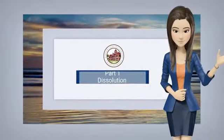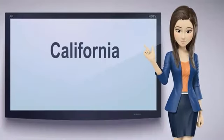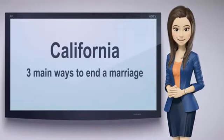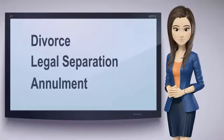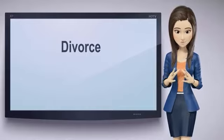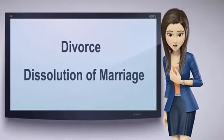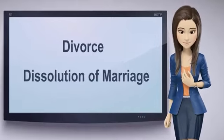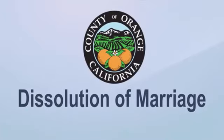Before you begin, there are some things you need to know. In California there are three main ways to end a marriage: divorce, legal separation, or annulment. A divorce in California is legally called a dissolution of marriage. This case tracker is only intended for parties who wish to file for divorce in Orange County.